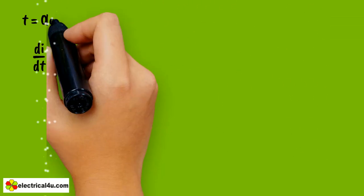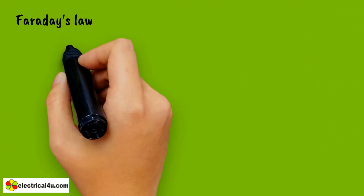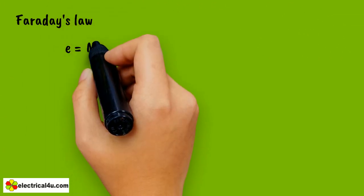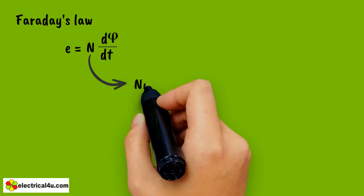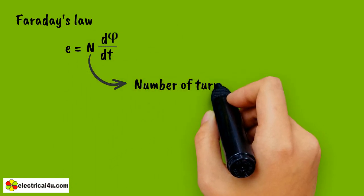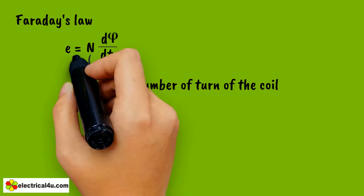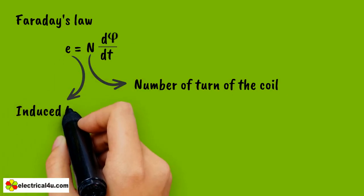Now apply Faraday's law in this coil. E equals N d phi dt, where N is the number of turns of the coil and E is the induced EMF across this coil.